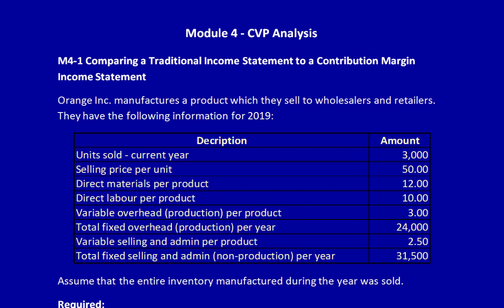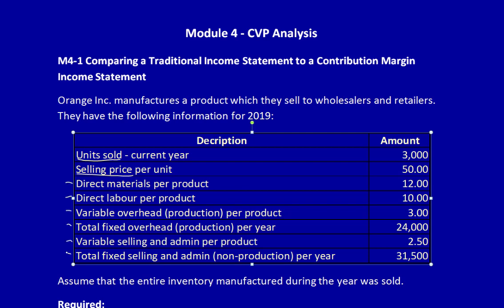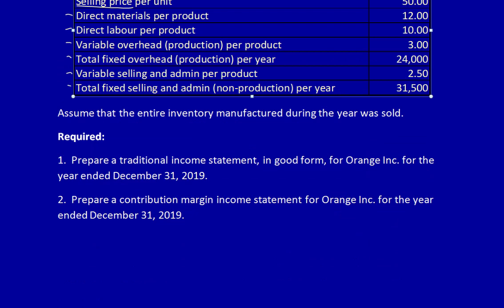As always, we start by reading the question. Orange Inc. manufactures a product which they sell to wholesalers and retailers. They have the following information for 2019. Looking at this chart, it's important to recognize that some of the information is in dollars and some is in units. The first item is units sold, the next is selling price, and then every number thereafter is all about the costs. Assume that the entire inventory manufactured during the year was sold. This is important in future videos when we talk about the difference between absorption costing and variable costing.